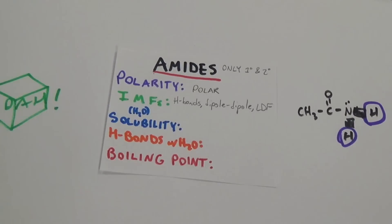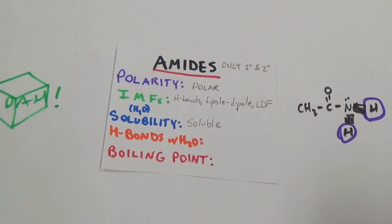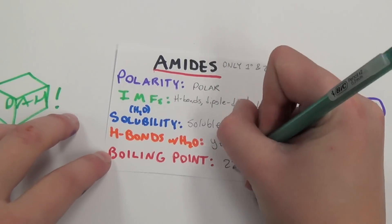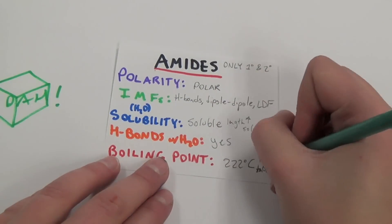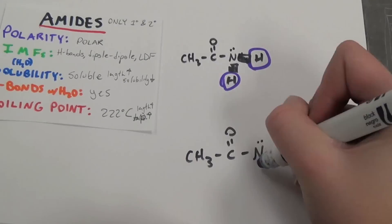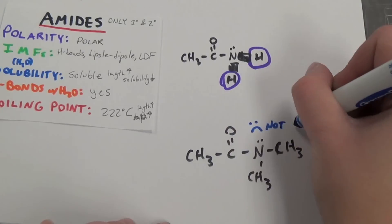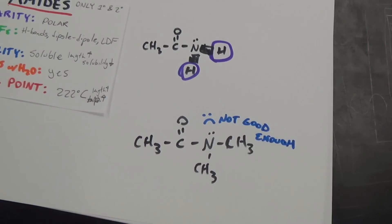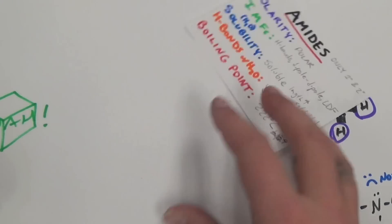This increased polarity makes amides very soluble in water and gives them the highest boiling point on our list, which is about 222 degrees Celsius. However, it is important to remember that only first and second degree amides, with their increased ability to hydrogen bond, are the most polar, and that third degree amides actually fall below alcohols on our list.